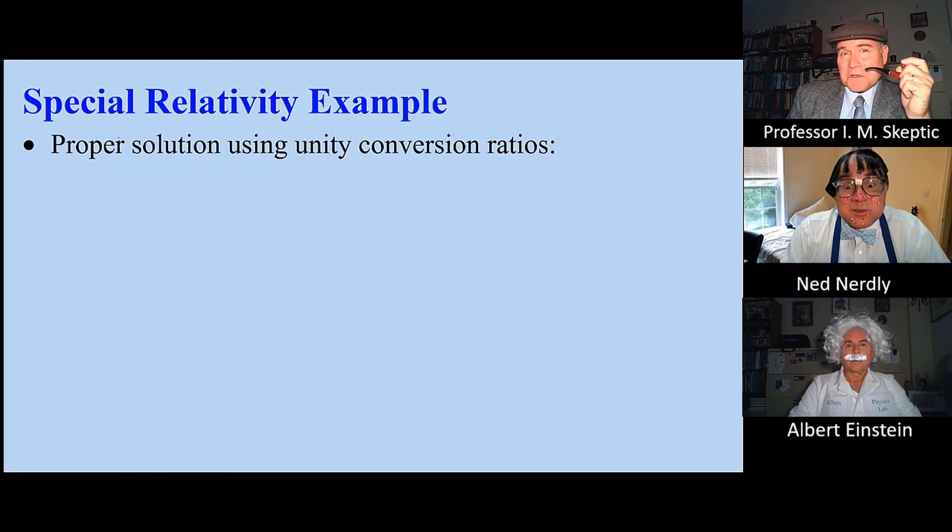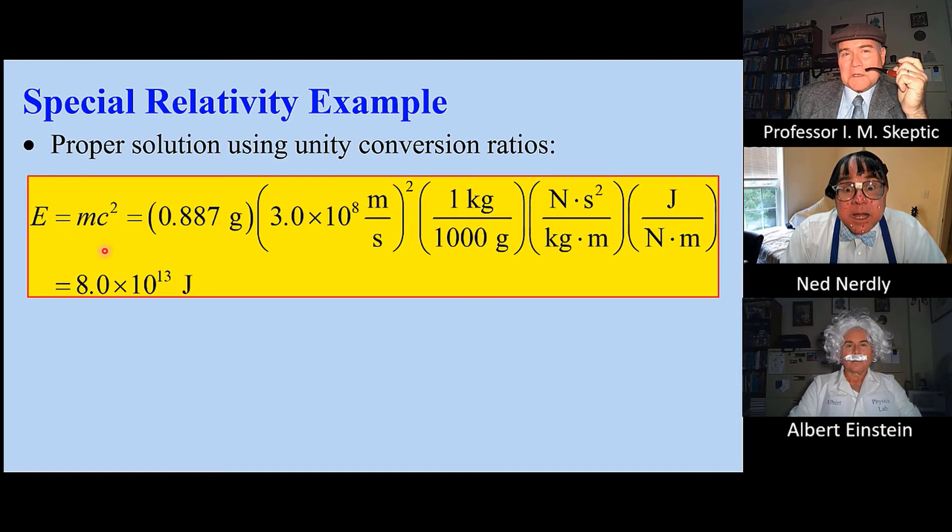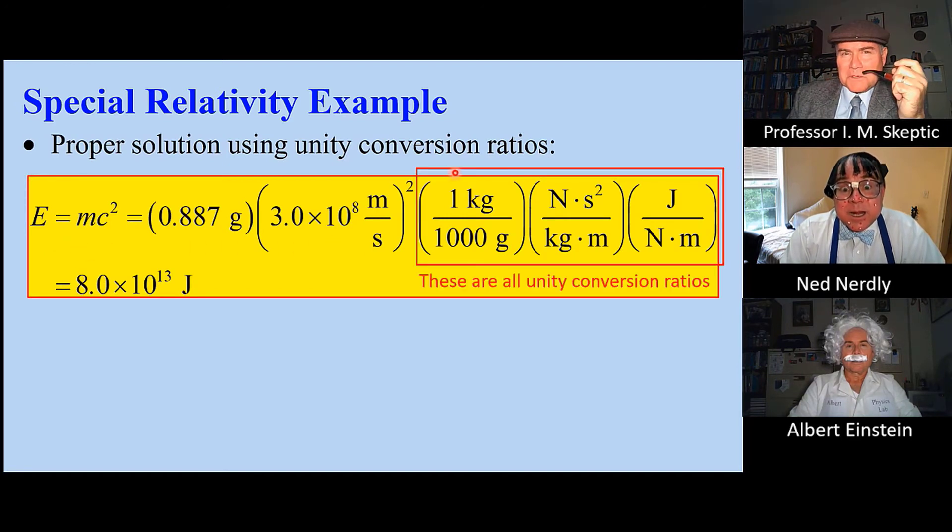Here's the proper solution using unity conversion ratios. We use Albert's famous equation, E equals M times C squared, and we string together these three unity conversion ratios. You get about 8 times 10 to the 13th joules.